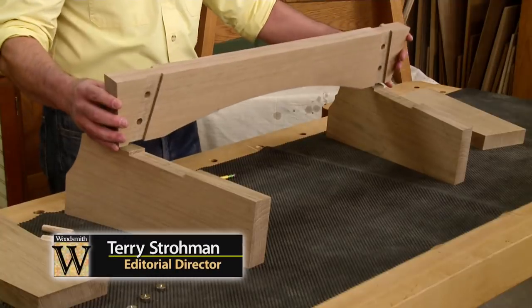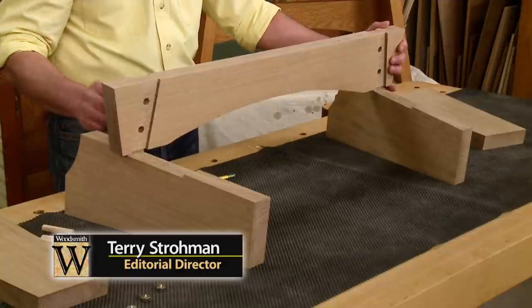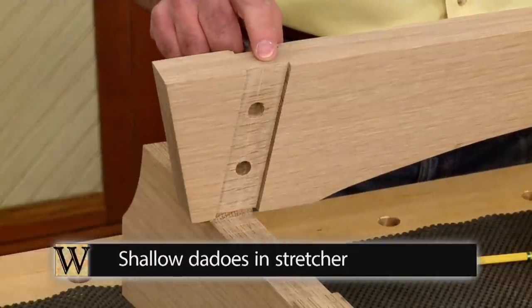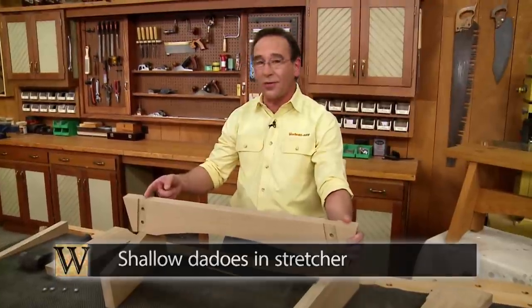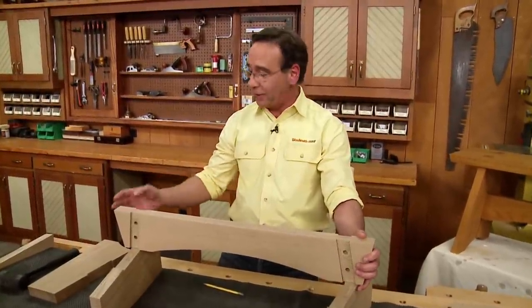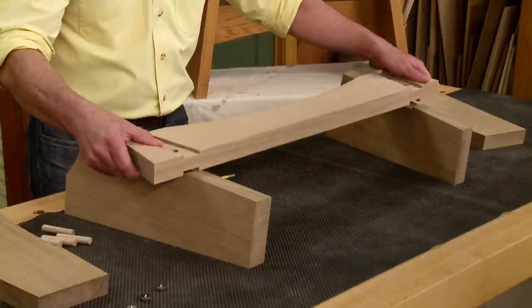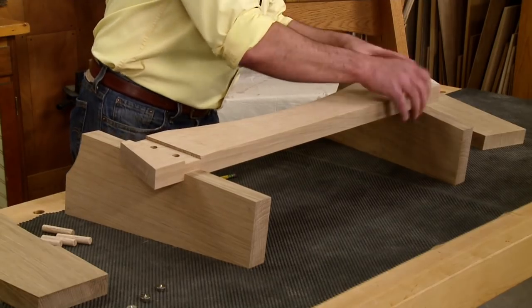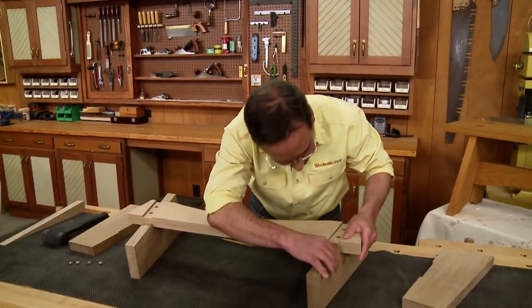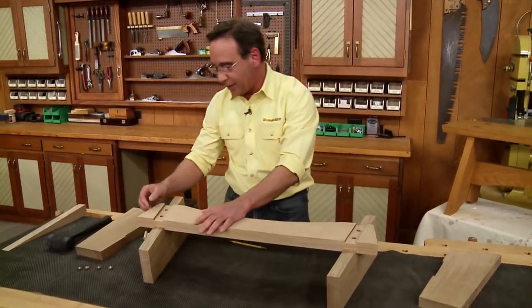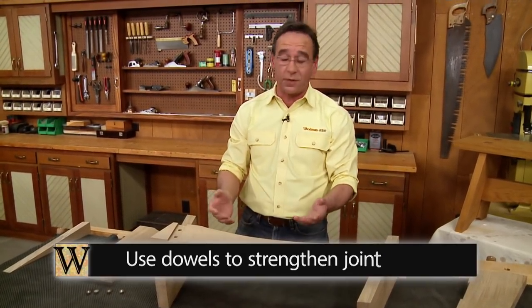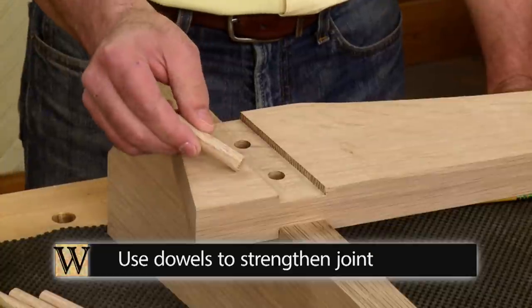A stretcher like this is used to connect the legs of the bench. Now, the end of the stretcher has been mitered. There's also shallow dados cut in each face. Now, the dados were angled using the same technique that Phil used earlier. Now, these angled dados interlock with the dados already cut in the legs. And get that just in there, just like that. Now, even though they interlock, there's a lot of stress on this joint, so I want to reinforce it. And for that, I'm going to use dowels.